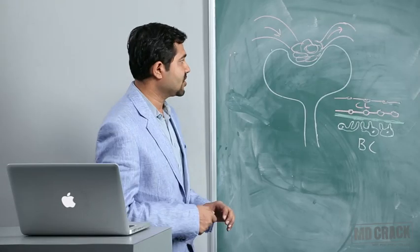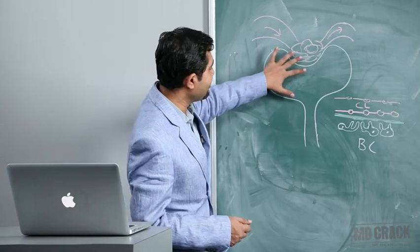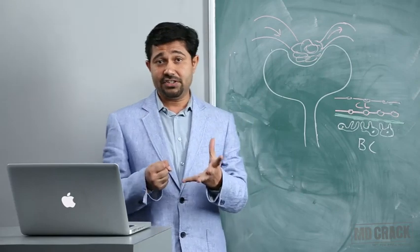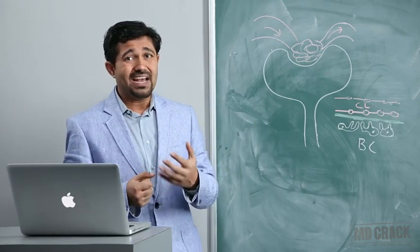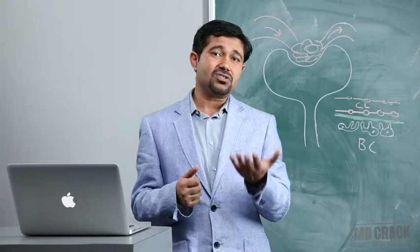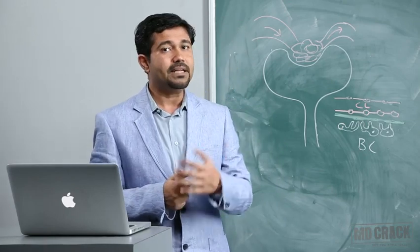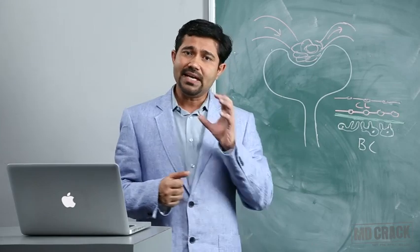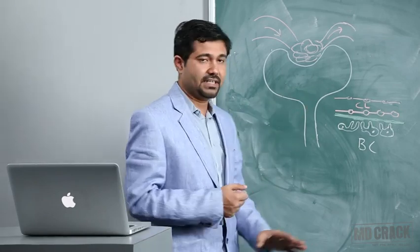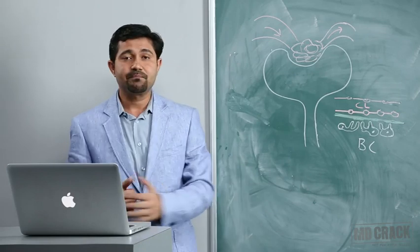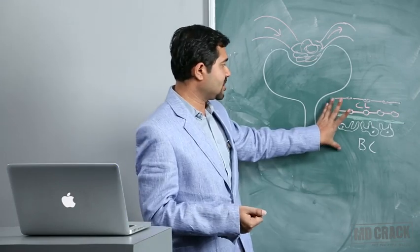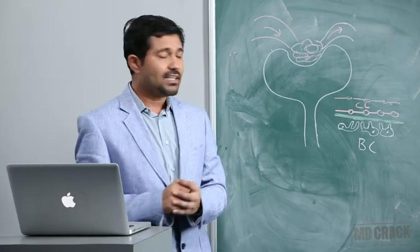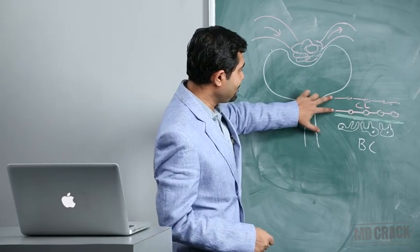Let us look at the detailed structure of the glomerular capillary membrane, which is mainly responsible for filtration. Any histological disturbance or pathology affecting this membrane will naturally affect filtration and disturb kidney function. This is the histological structure of the glomerular capillary membrane. As you can see, these are the capillaries.